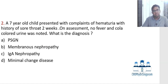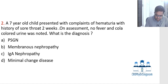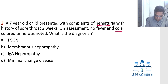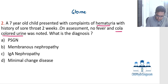The next question: a 7-year-old child presented with hematuria and history of sore throat 2 weeks back. On assessment, no fever and cola-colored urine was noted. What is the diagnosis? This child is presenting with hematuria and cola-colored urine. Whenever we have hematuria with cola-colored urine, the number one possibility is glomerulonephritis.